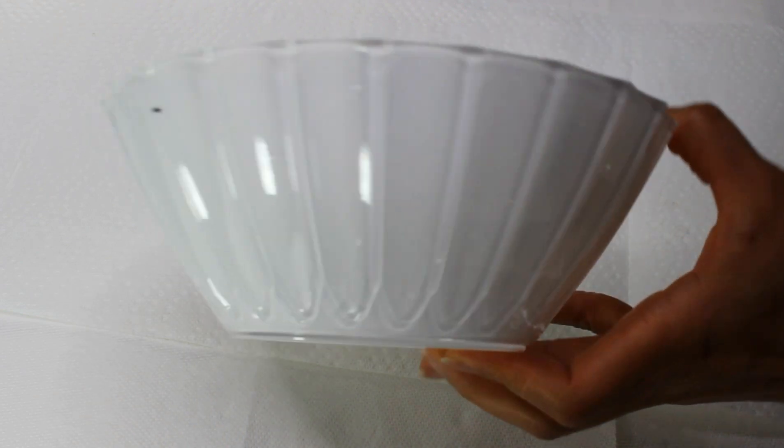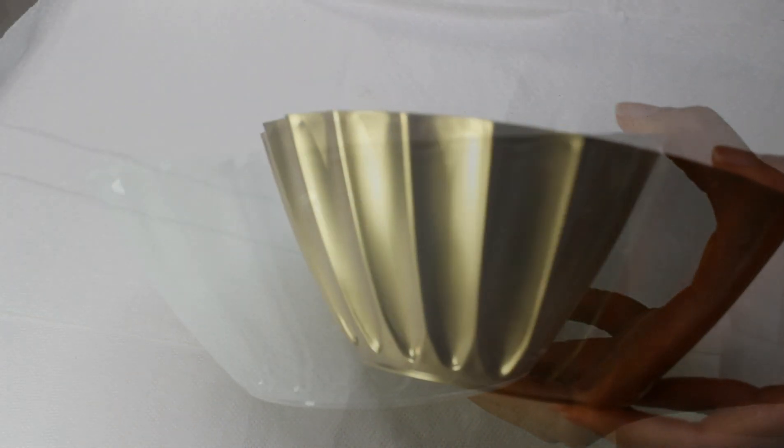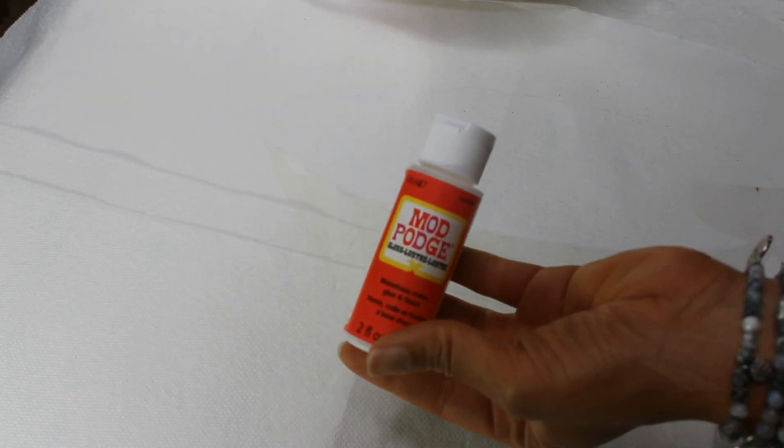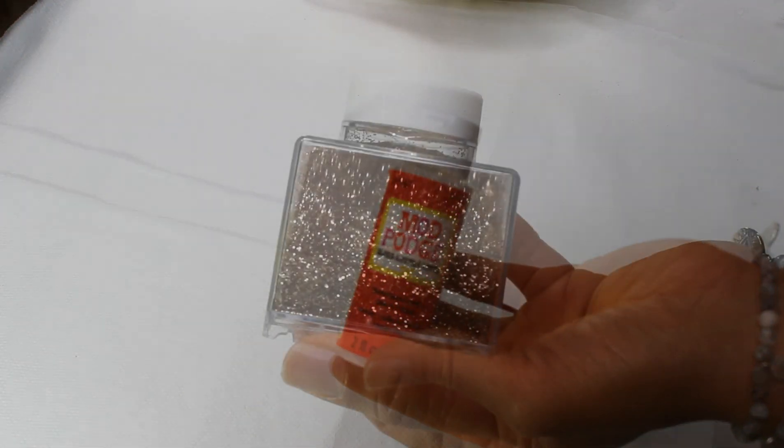Next, I'm just going to take this bowl that I had from a previous project and spray painted gold. Then I'm going to go ahead and add some Mod Podge and some gold fine glitter.